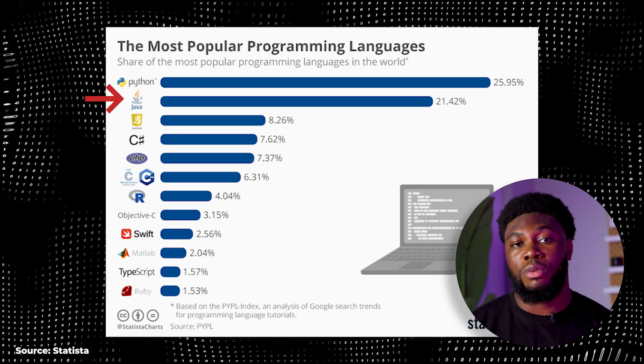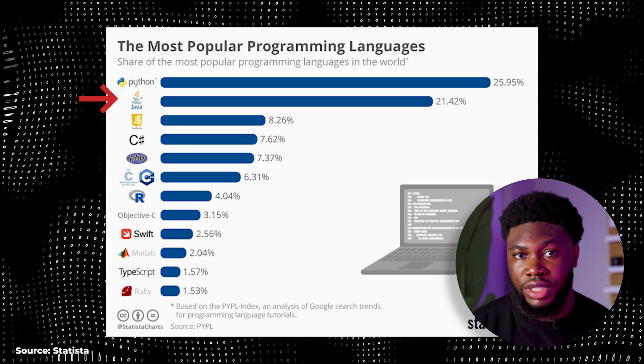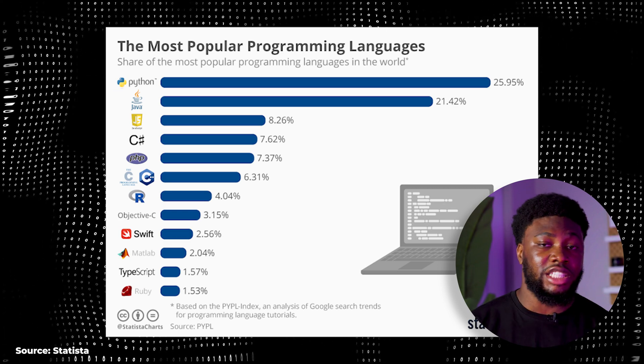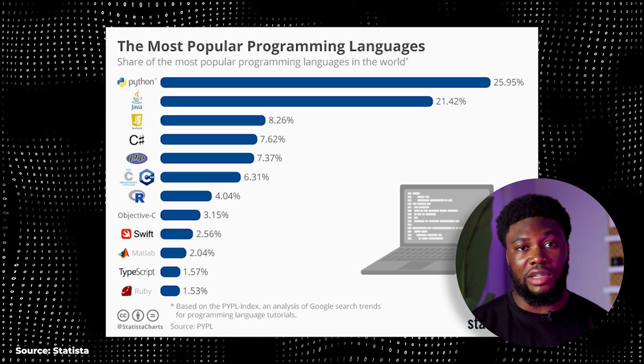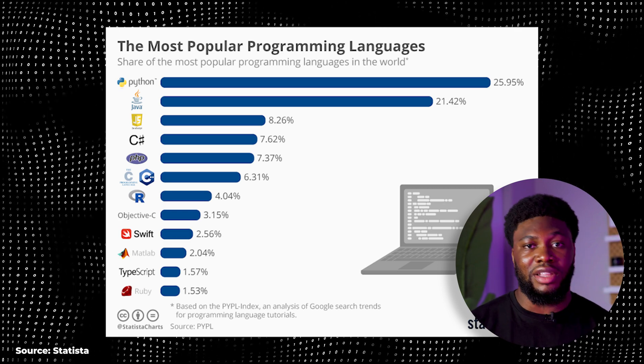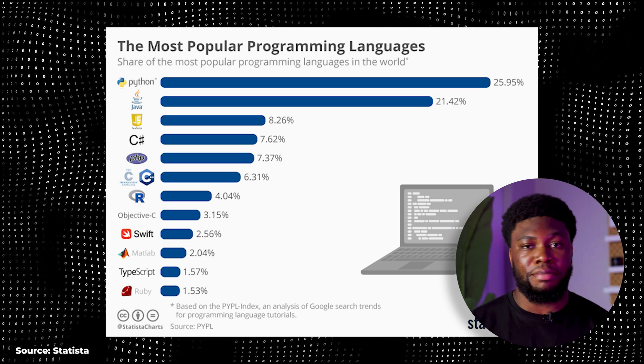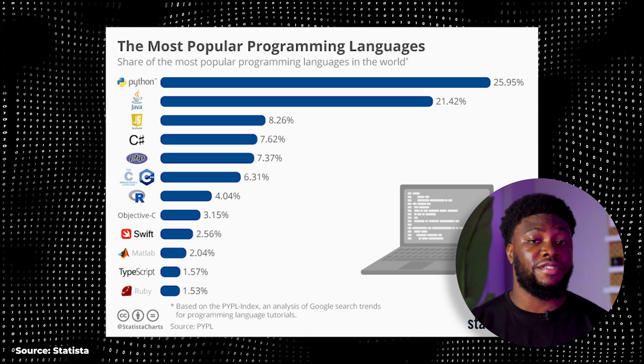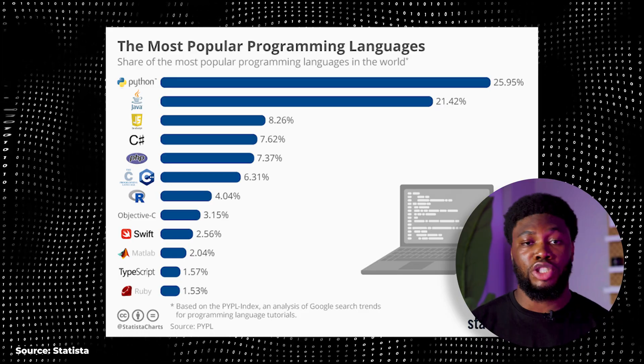With popular frameworks like Spring Boot, Java is used in enterprise software development, web development, mobile app development, scientific computing, and much more.